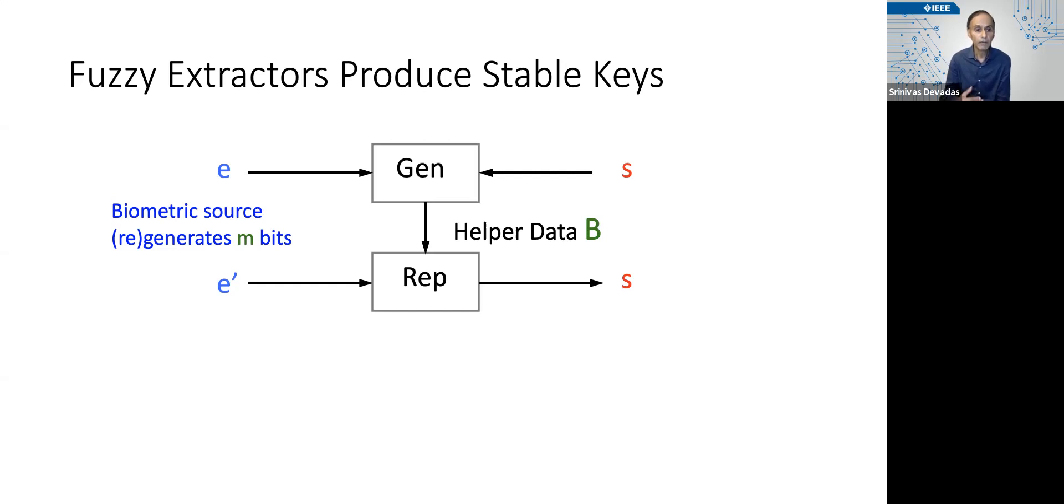Which is going to be useful in the reproduce step, or the rep step, where when you regenerate from the biometric source, you rerun the ring oscillators again, you have some error rate associated with that, so you get e′, which is not exactly equal to e, but using the helper data B, one can regenerate the exact bit exact secret s.